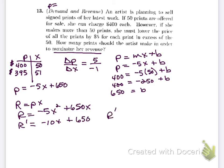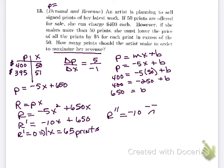Revenue equals price times quantity, so revenue equals negative 5x squared plus 650x. Taking R prime equals negative 10x plus 650, and R double prime equals negative 10, confirming maximization. Setting R prime equal to zero gives x equals 65. The artist should make 65 prints to maximize revenue. They didn't ask for the price or the revenue value, so 65 prints is the complete answer.